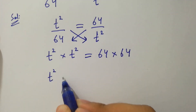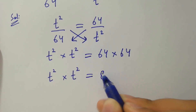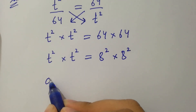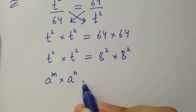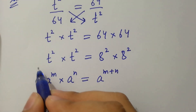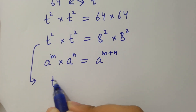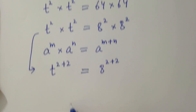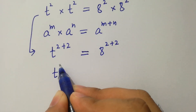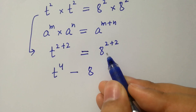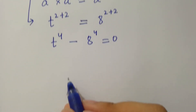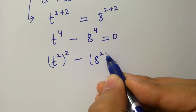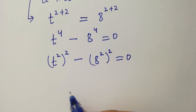t squared times t squared. Since a to the power m times a to the power n equals a to the power m plus n, it will be t to the power 2 plus 2 equal to 8 to the power 2 plus 2. So t to the power 4 minus 8 to the power 4 equals 0, which is the same as t squared to the power 2 minus 8 squared to the power 2 equal to 0, since 2 times 2 is 4.